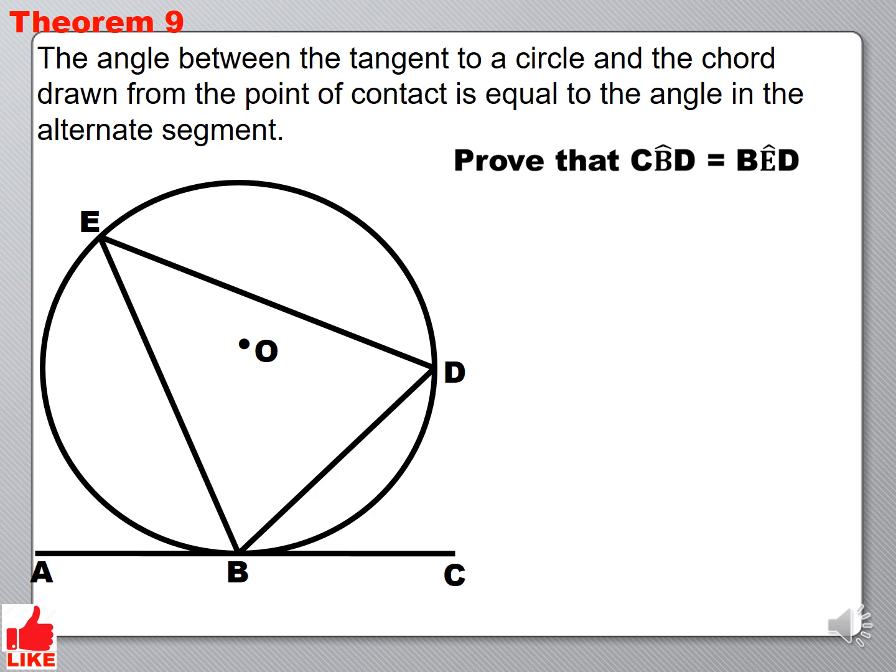So in our diagram we are given a circle with center O. The angle that we want to show here, we want to prove that angle CBD equals angle BED. So in this diagram the tangent is line ABC. Now the chord is line BD. So this angle here is the angle between the chord and the tangent. Then the angle in the alternative segment is angle E. That is the angle that we are referring to.